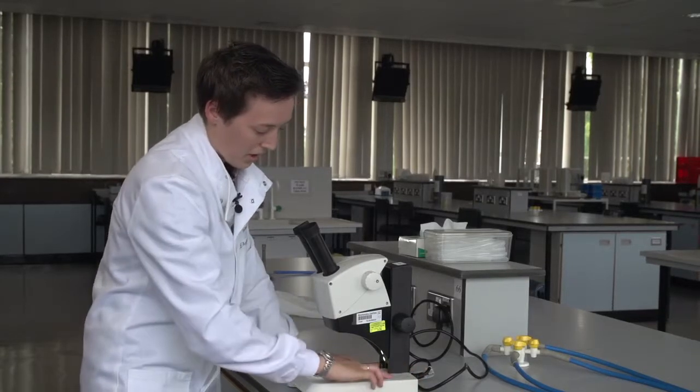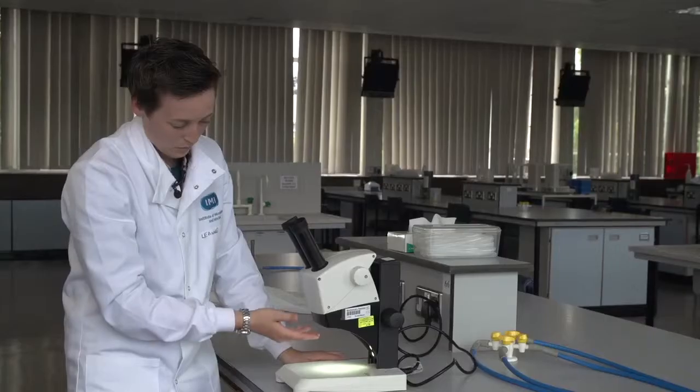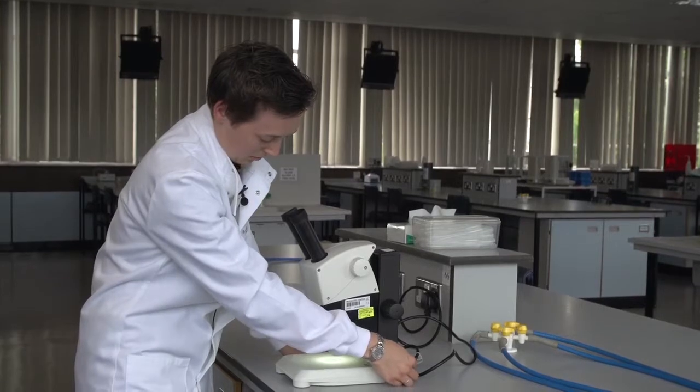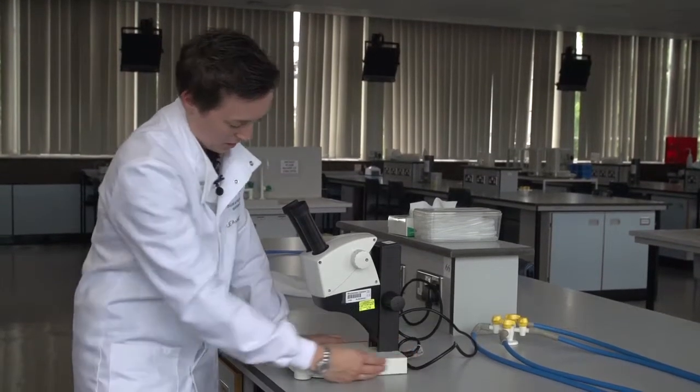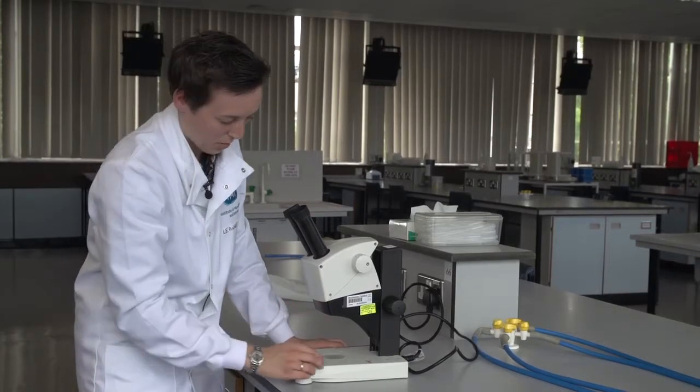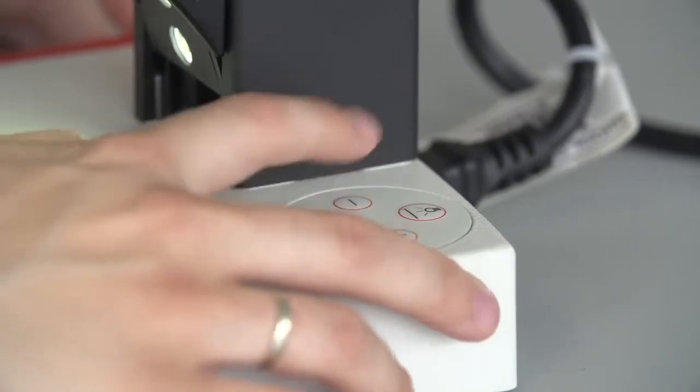On the front here is where we can adjust our light levels. At the moment we have the top lights on and we can change how many of the LED lights we have on at the top, and we can also have under lighting as well and change the levels of that.